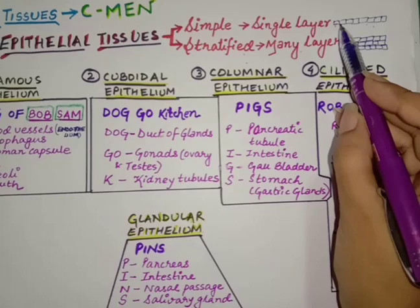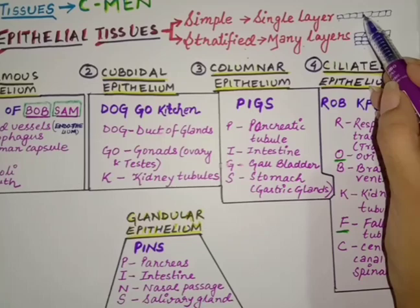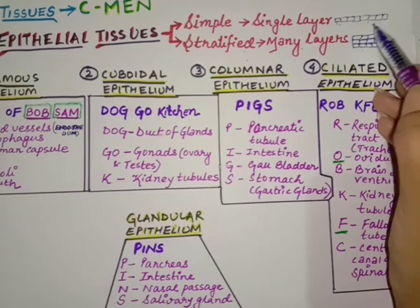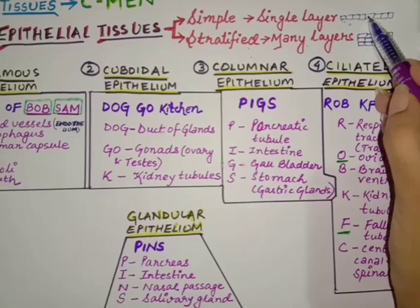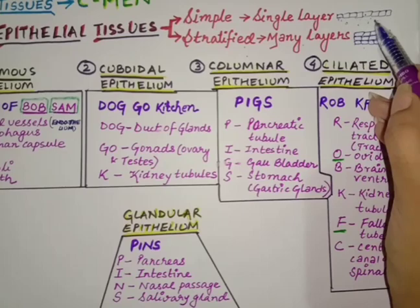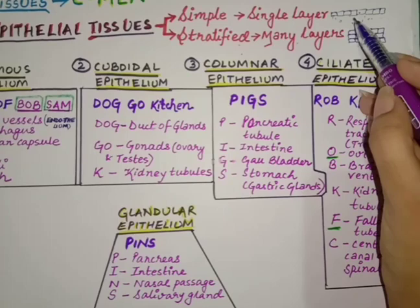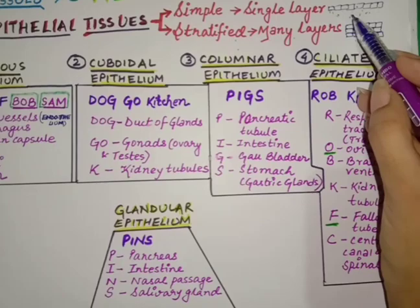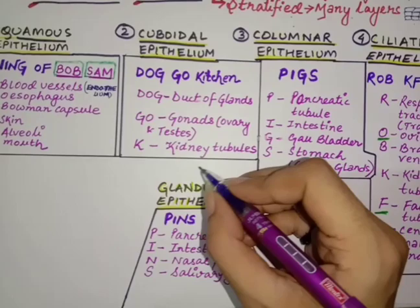Epithelial cells are not innervated by blood vessels, so they are not vascular in nature. From where do they derive their nutrition? Just below the epithelial cells lies the connective tissue, where blood vessels are present. So epithelial tissue can easily take nutrition from there with the help of diffusion. The two main characteristics of epithelial tissue are: they are tightly packed with no intercellular spaces, and they are not vascular — they derive nutrition from the underlying connective tissues.